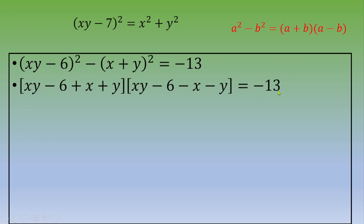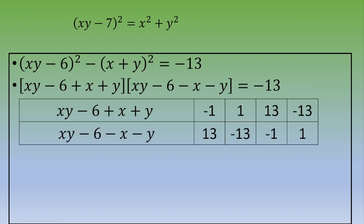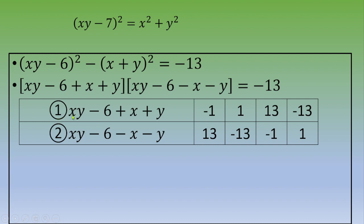This is interesting because 13 is a prime number. So if these two factors multiply to negative 13, there are only four possibilities: negative 1 times 13, positive 1 times negative 13, 13 times negative 1, or negative 13 times 1. Let's call the first factor ① and the second factor ②.